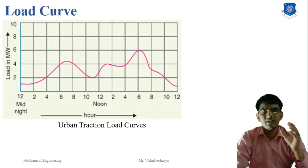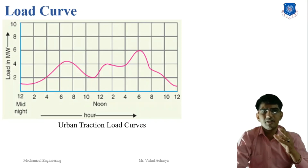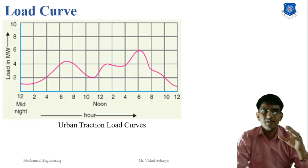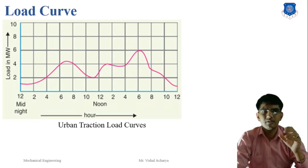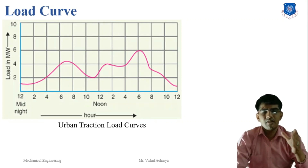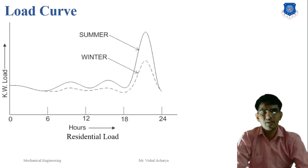The next load curve represents the urban traction load curve. In the urban traction load curve, from midnight to noon the load first increases then decreases. This pattern is defined for the urban condition. After midday, the same graph represents peak load at 6 a.m. and 6 p.m. — both before noon and after noon there are peak load conditions, then the graph decreases. For the urban traction condition, only one graph is plotted for both summer and winter.